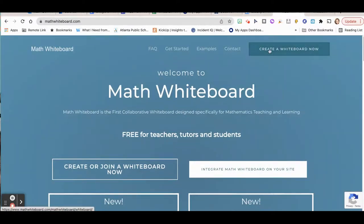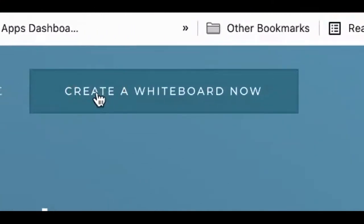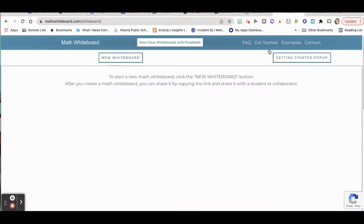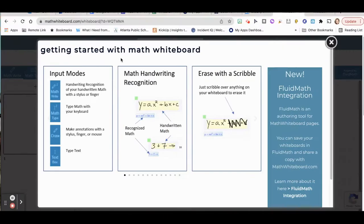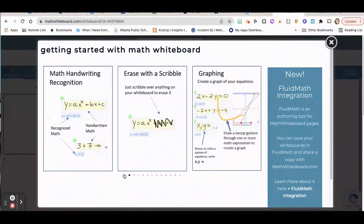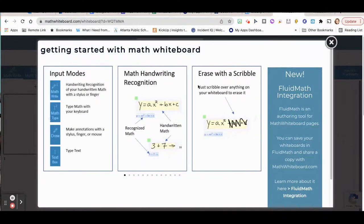So to create a whiteboard, just click on the button that says create a whiteboard now. Then you'll start with new whiteboard. When you click on new whiteboard, a pop-up with all the different features. You can close that if you want, but I'm going to go through the different features with you really quickly.